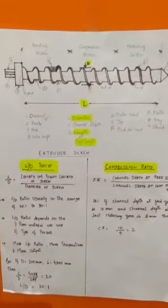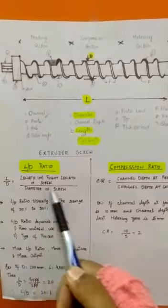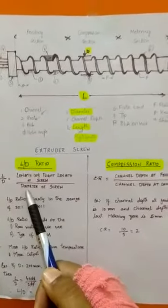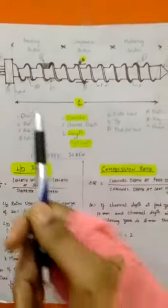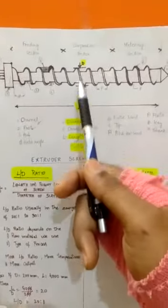What is L by D ratio? It is the ratio of length of the screw by diameter of the screw. So length of the screw divided by diameter of the screw.